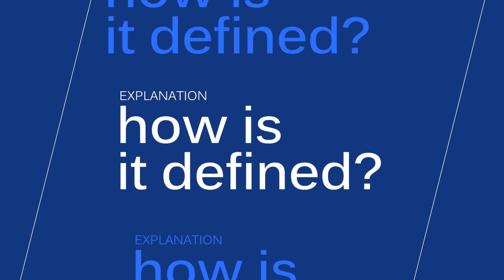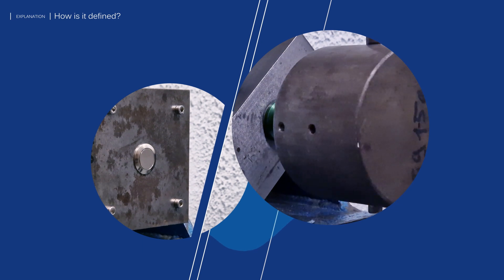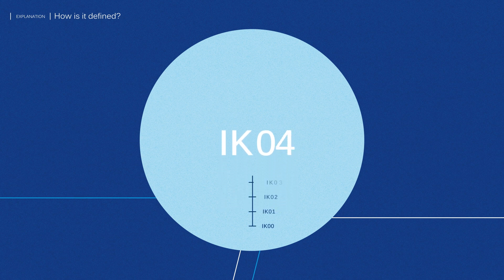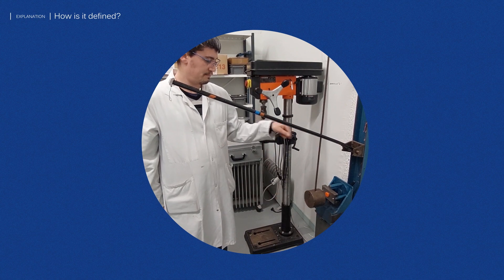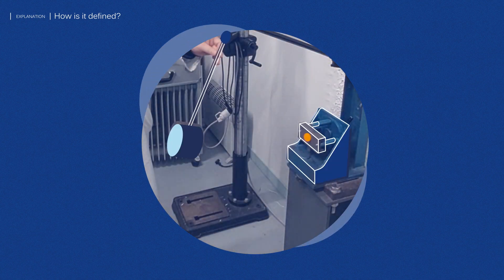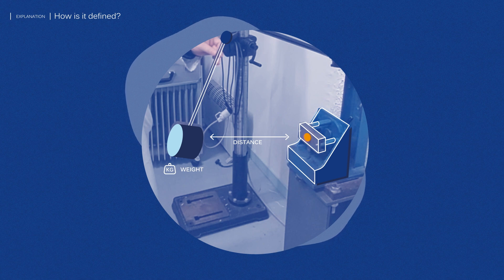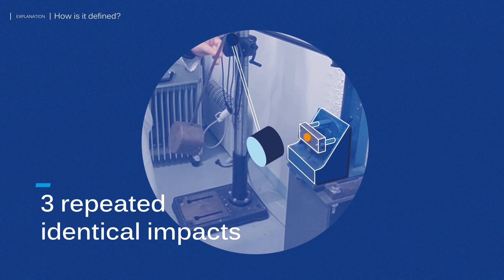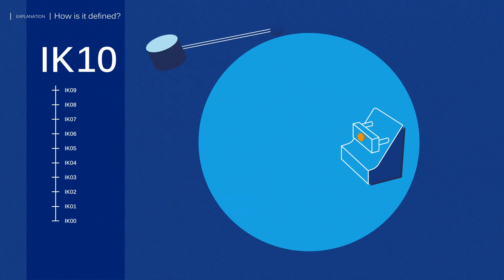The IK rating is assigned through a test carried out with a Charpy Pendulum tester, and is defined as IK followed by a number from 00 to 10. The impact energy is defined by two aspects: one, the distance between the hammer and the tested sample, and two, the weight of the hammer. The test must be conducted in three repeated identical impacts, and the highest impact level at which the product is still working decides the code.